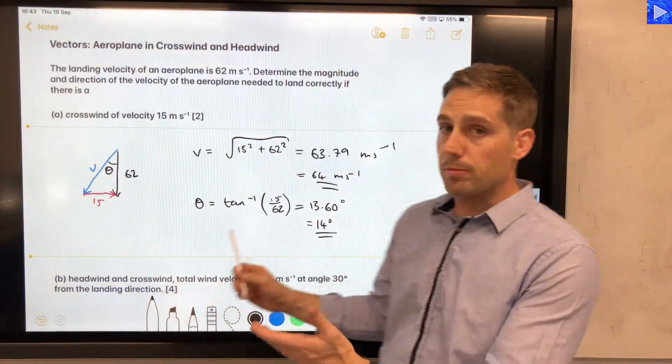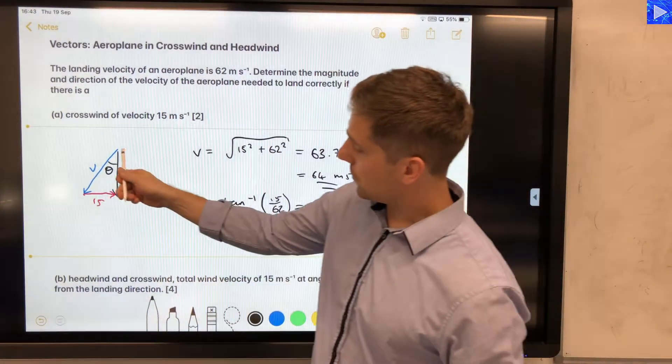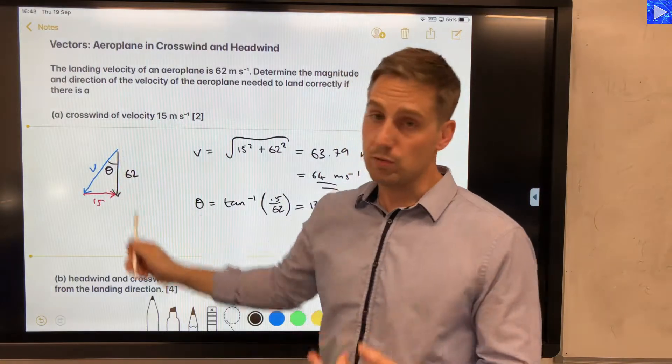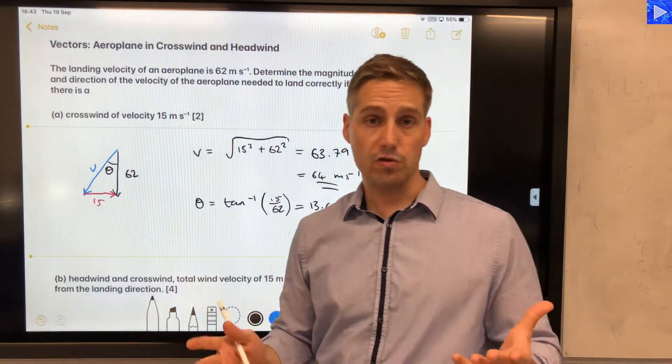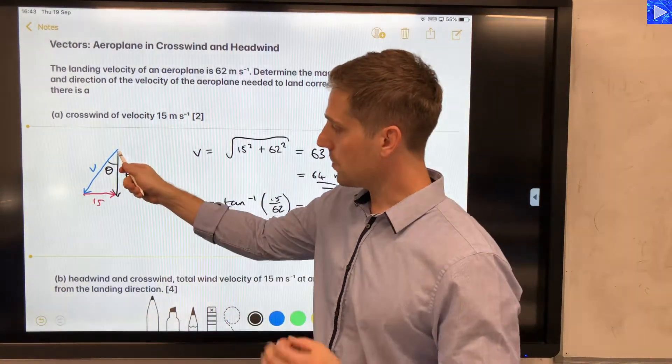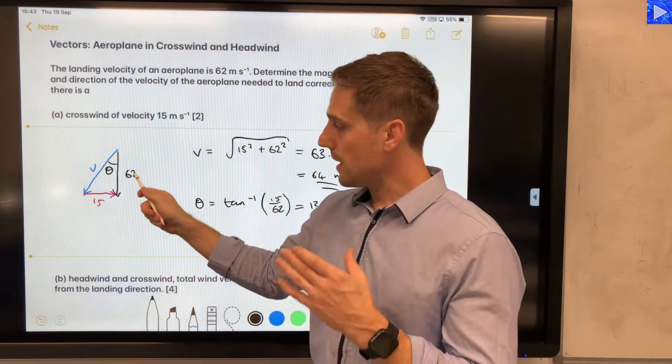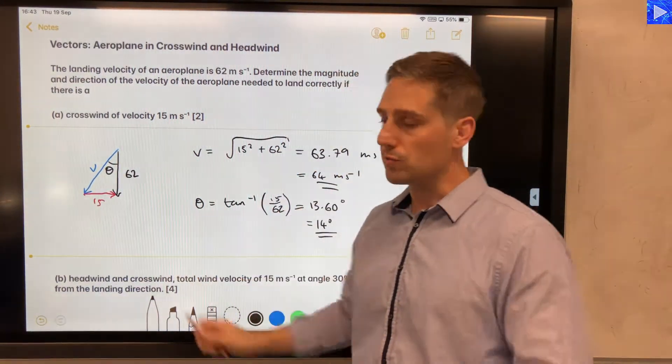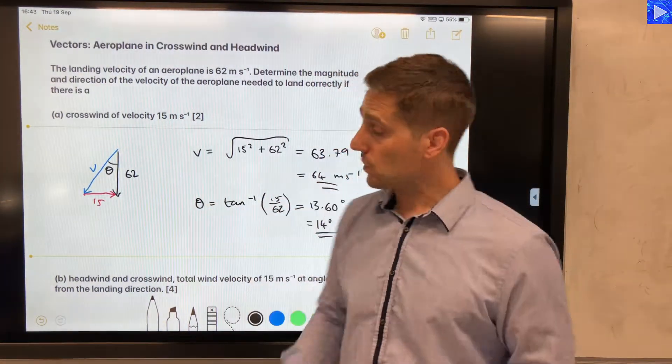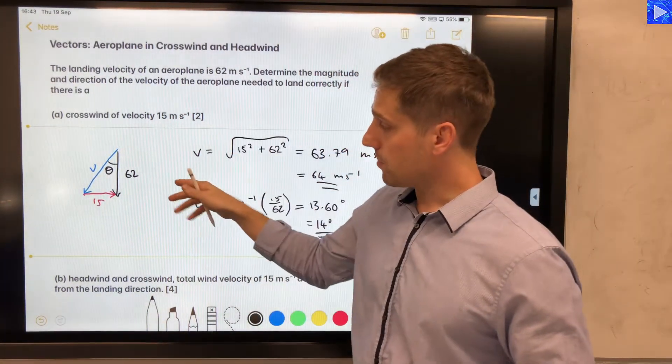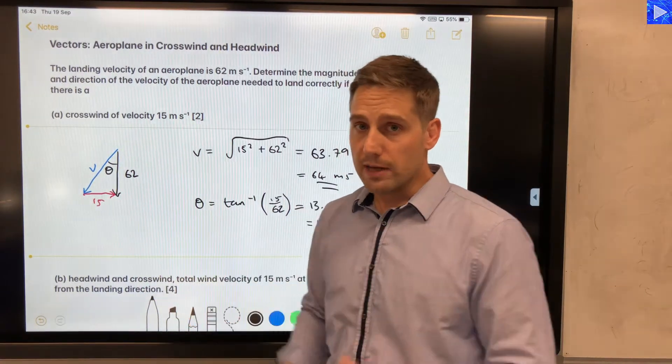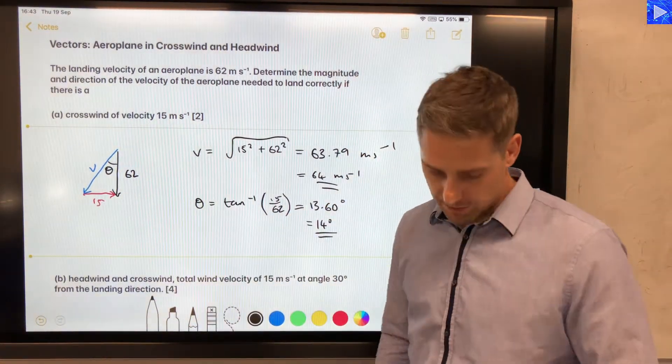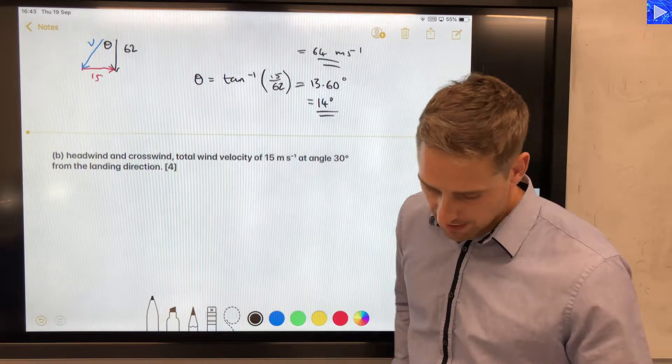And that's the first problem. So what was interesting about that was that we actually started off with the resultant, and that's the thing that probably would trip up most students: realizing that we're starting with the resultant and we need to work out which velocity vector to add to the crosswind. We're now going to use pretty much the same principle in solving the second problem, though it's a little more complex because we have to interpret the headwind as well. So let's have a look at that.